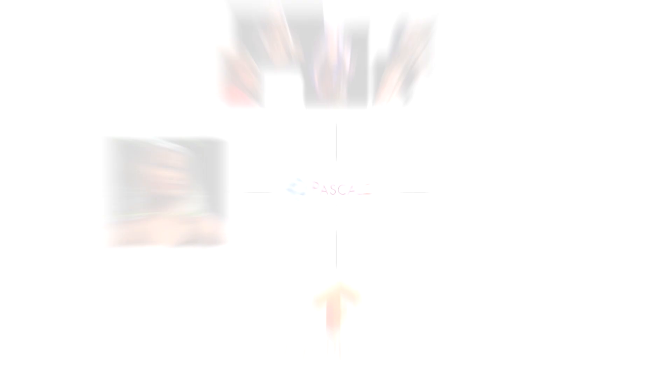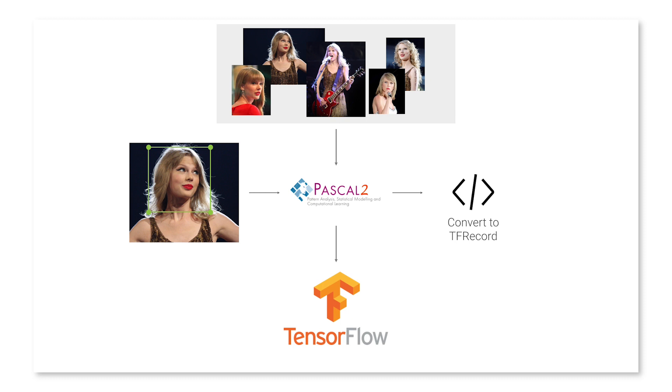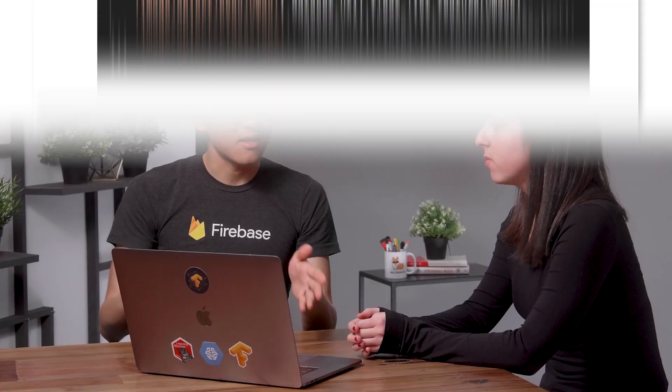So the full pipeline connects like this: I drew the bounding boxes around my images, got them into Pascal VOC format, then wrote a script to convert them to a TF Record, which I can feed into my model. For training, we're using ML Engine. The main difference from running training locally was needing to put all of my data in Google Cloud Storage and tell ML Engine where to find it.